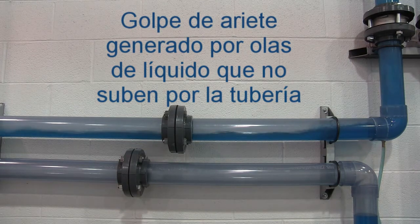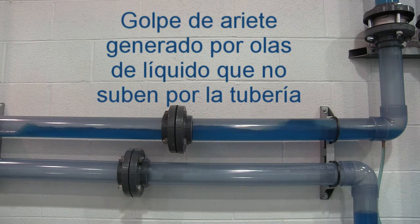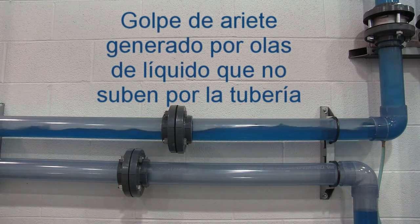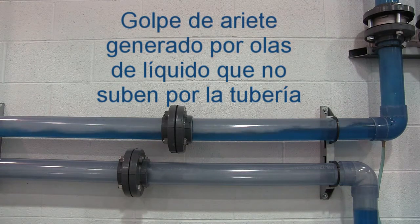Two scenarios are examined. First is a commonly seen piping installation of flashing condensate with a vertical rise. Wave action can be seen in the top pipe, caused by high-velocity steam moving over the surface of the liquid, gradually forming waves within the pipe.